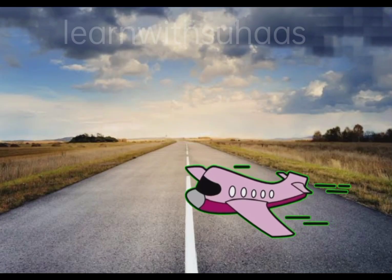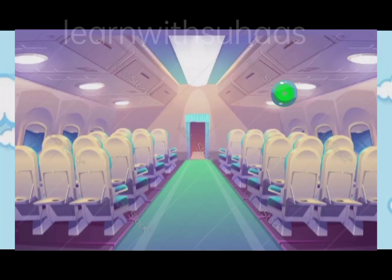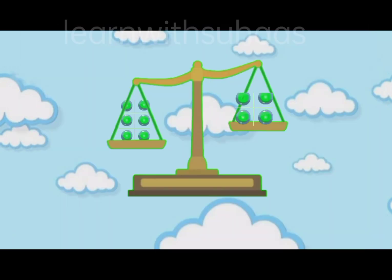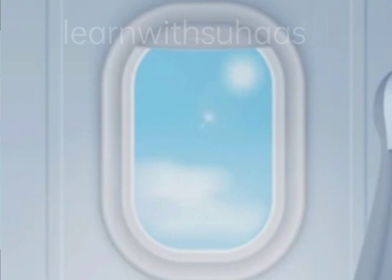When an aeroplane starts climbing upwards, the air pressure starts dropping. But in order to keep the passengers safe, aeroplanes maintain the internal air pressure. Thus, there is a huge air pressure difference, and air from the high pressure area starts moving to the low pressure area, putting a lot of stress on the aeroplane windows.